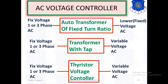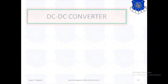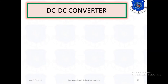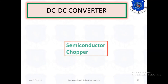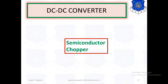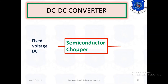The DC to DC converter is also called a chopper or semiconductor chopper. The input is fixed voltage DC and the output is variable voltage DC. So a chopper is a device used to convert fixed voltage DC into variable voltage DC.